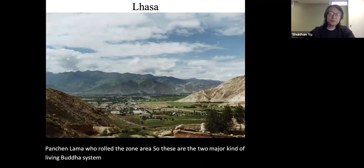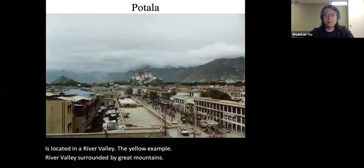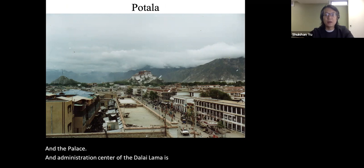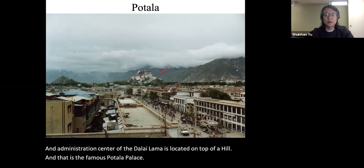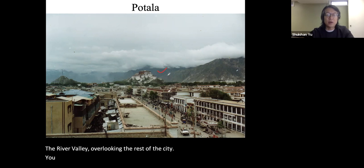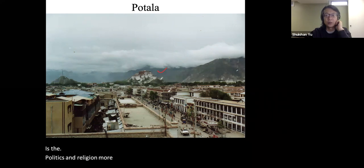The city of Lhasa is located in the Yalung Zangpo River Valley, surrounded by great mountains. The palace and administration center of the Dalai Lama is located on top of a hill — the famous Potala Palace — which enjoys the high spot of this river valley overlooking the rest of the city, like the Athenian Acropolis. It is basically a castle where politics and religion were combined.